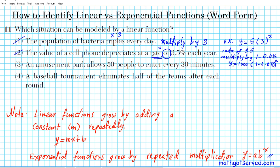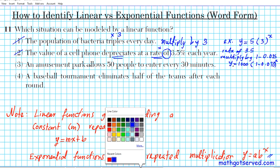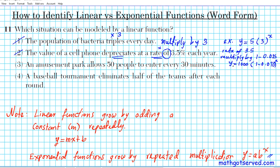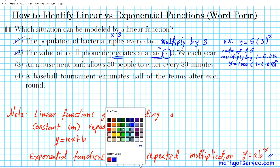Don't forget if you have rate of a certain percent, it's basically repeated multiplication. Depreciation indicates subtraction, and if it were appreciation, we would add this percentage value to one. Now let's take a look at option three. An amusement park allows 50 people to enter every 30 minutes. So what do you think is happening here for this particular one?